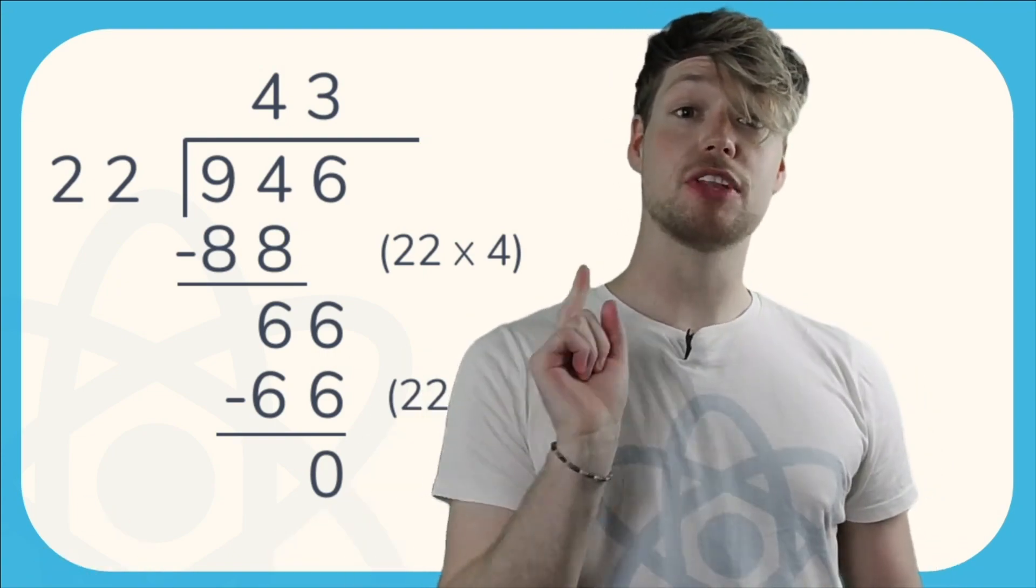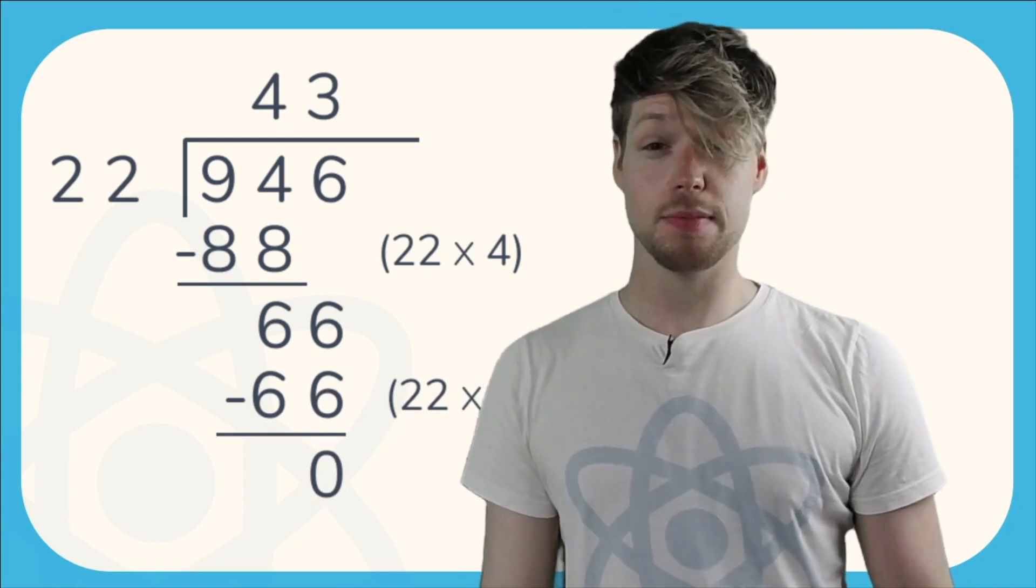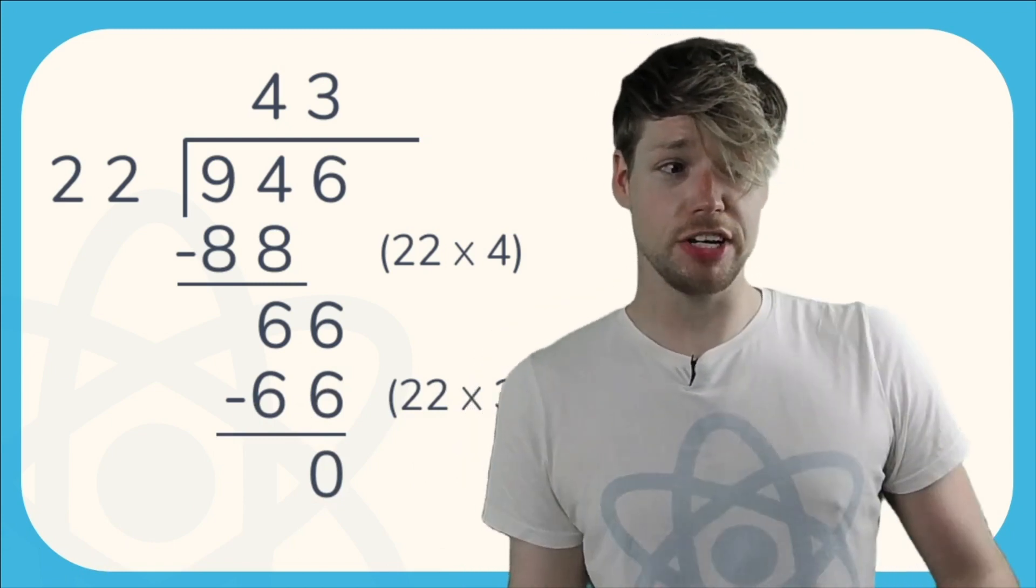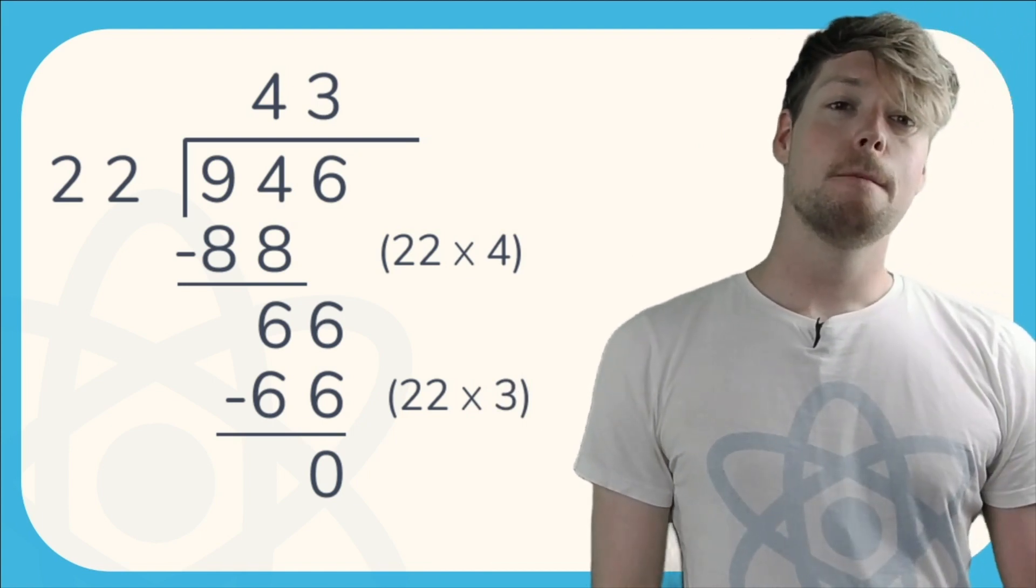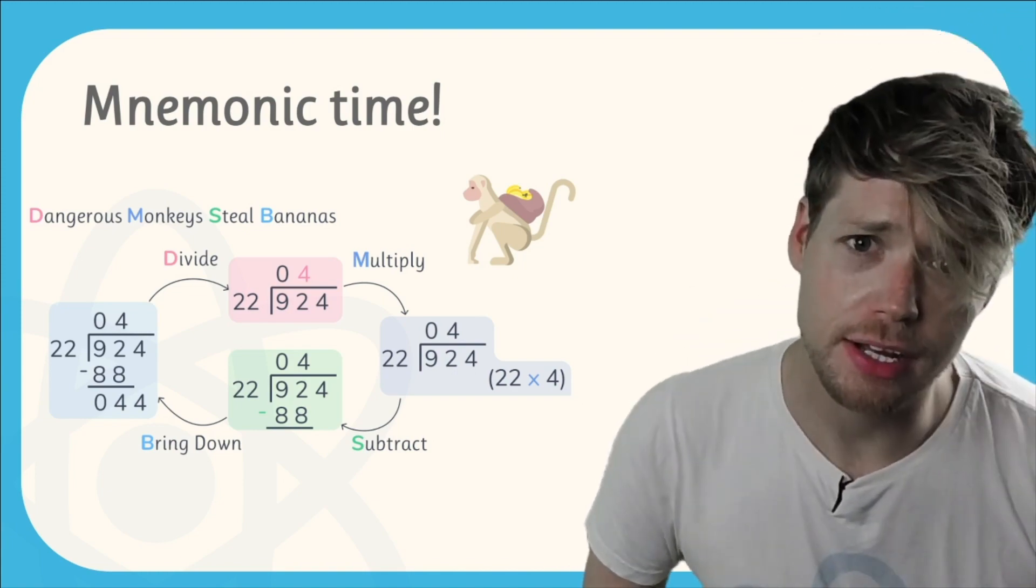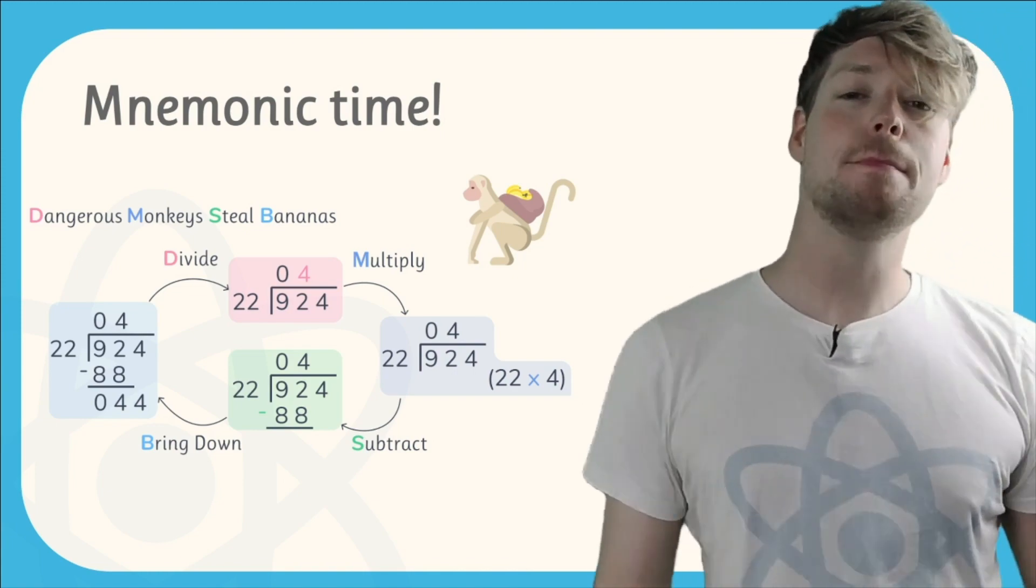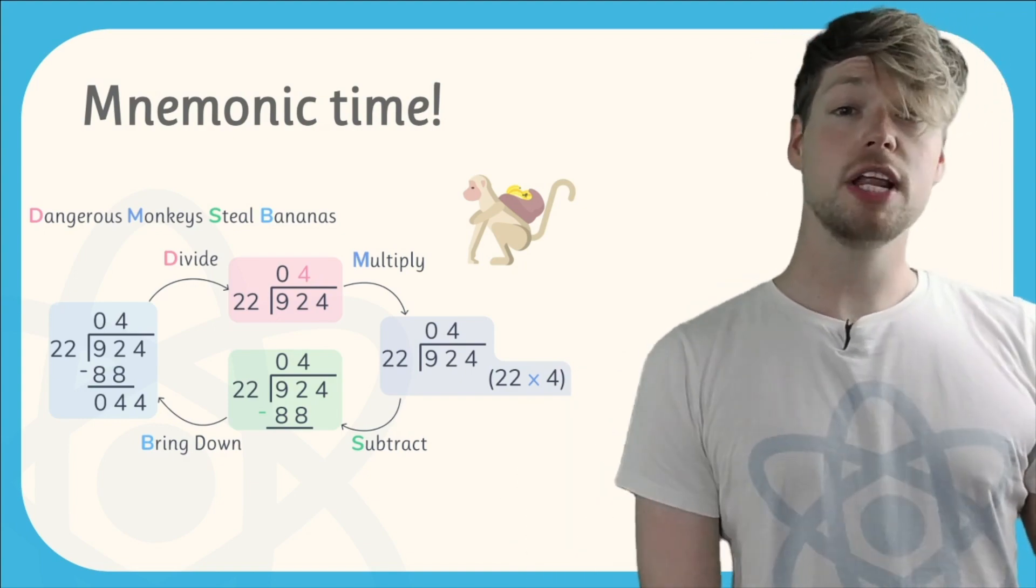So we're done, we've made it to the end. There's no remainder and there's no more numbers at the top to bring down. So 946 divided by 22 is just 43. We did it! See, it's not so bad, is it? But I know there's quite a lot to remember, right?